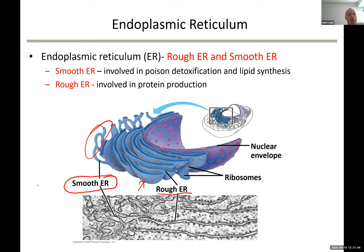By now you should have an idea of the function of the endoplasmic reticulum. If the rough ER has ribosomes attached to it, what function do you think it will have? It takes in the protein that is produced by the ribosomes, then forms vesicles which break off the endoplasmic reticulum and are taken to the next organelle — the Golgi apparatus.